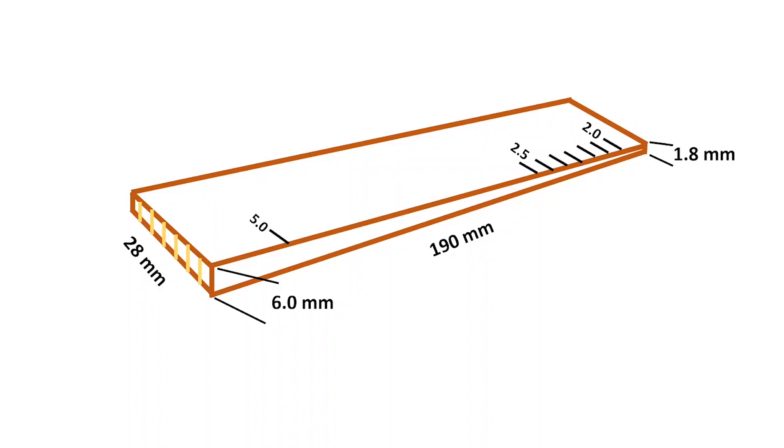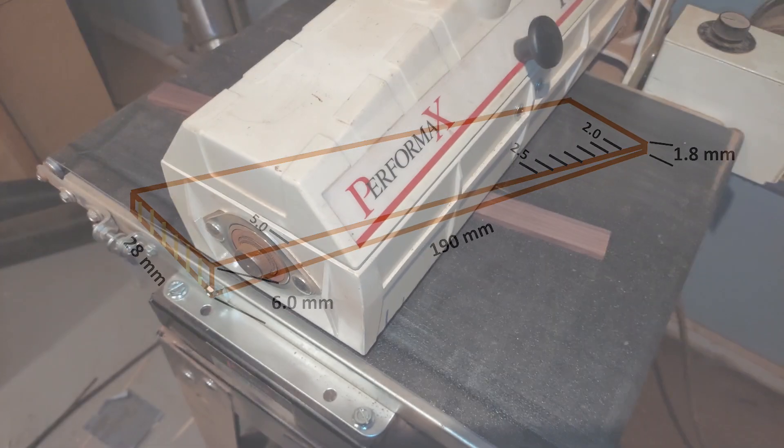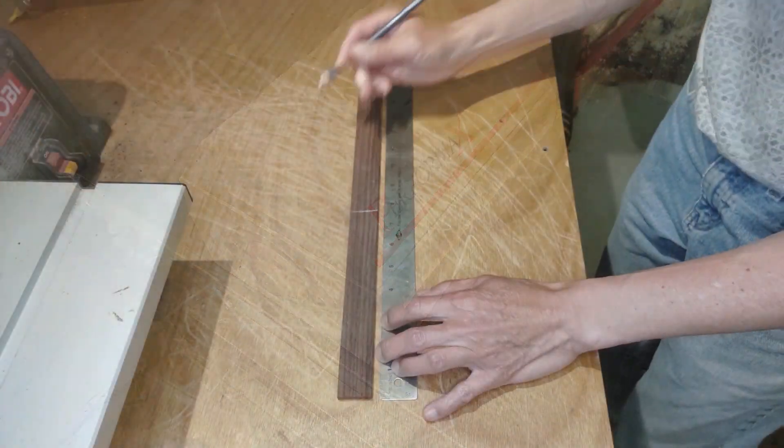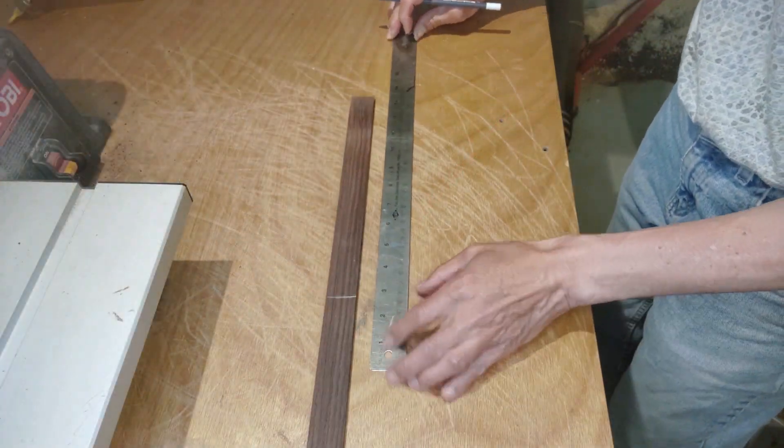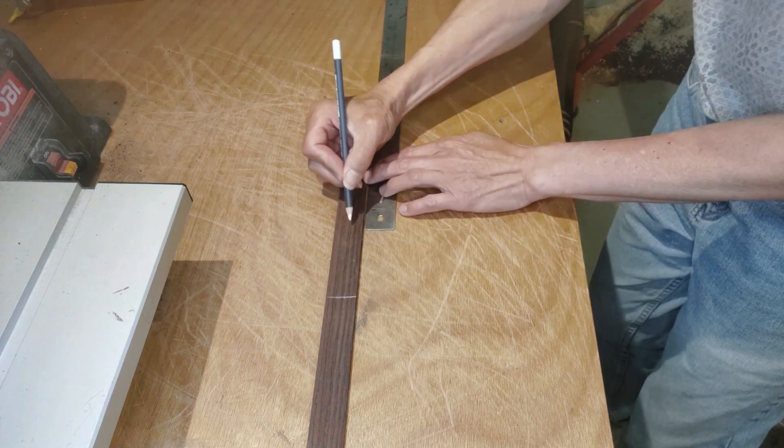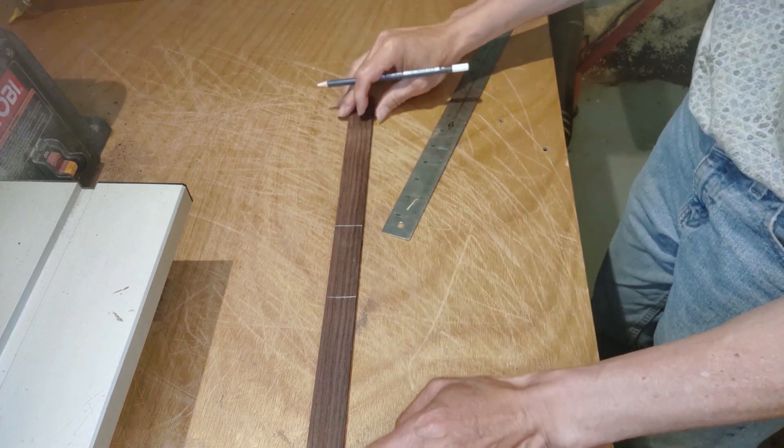Here I start with a piece of East Indian rosewood that's 28 millimeters wide and thickness it to 6 millimeters. I have it long enough to make two gauges, and as you'll see, this makes it easier to hold, and you'll make one of your guitarist or your friends really happy with this gift.